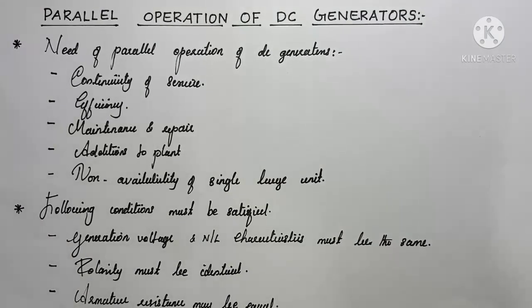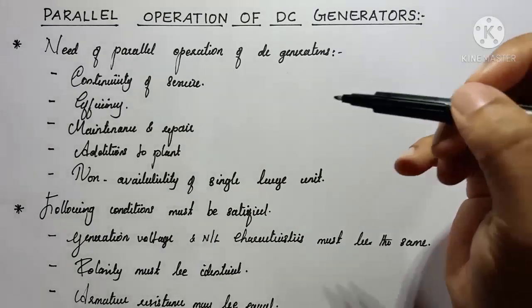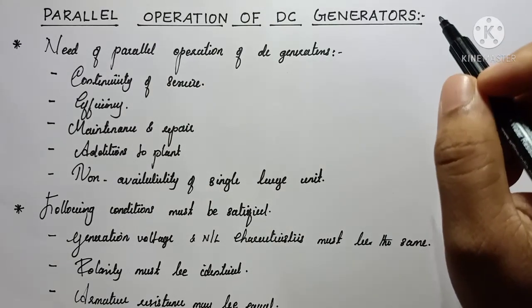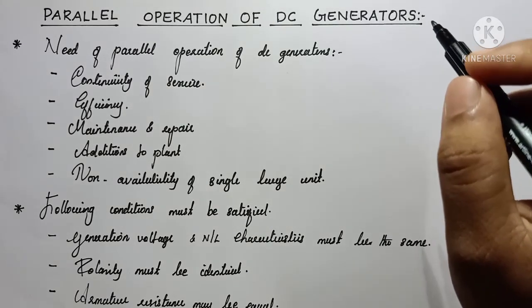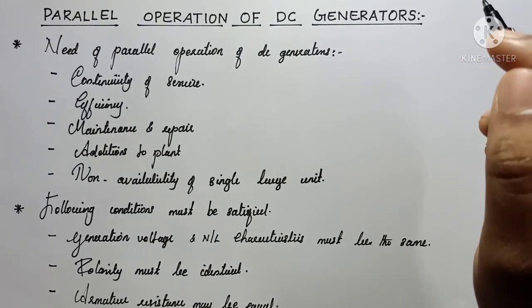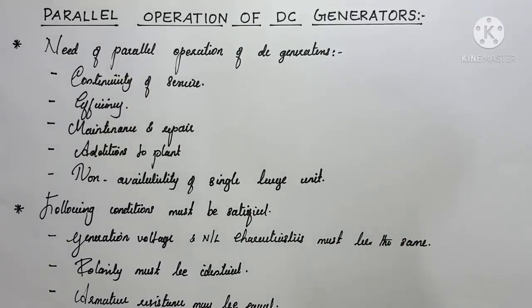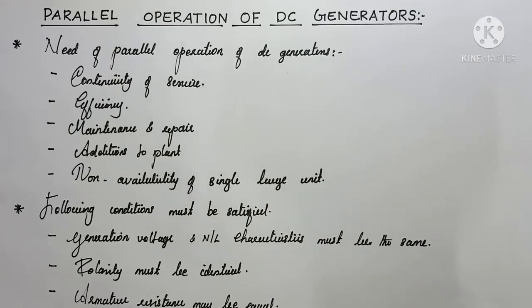In this lecture we will see the parallel operation of DC generators, including the parallel operation of series generators, shunt generators, and compound generators. We will also see what is the need for equalizer bars in DC generators during their parallel operation. Before going to see the parallel operation of these generators, we must be aware about the need for parallel operation.